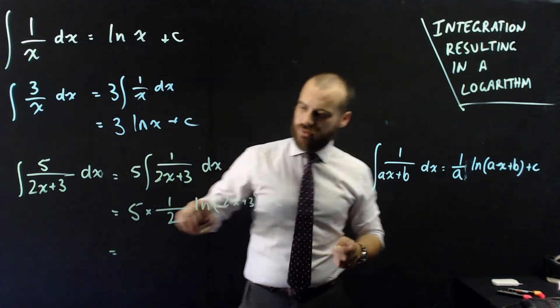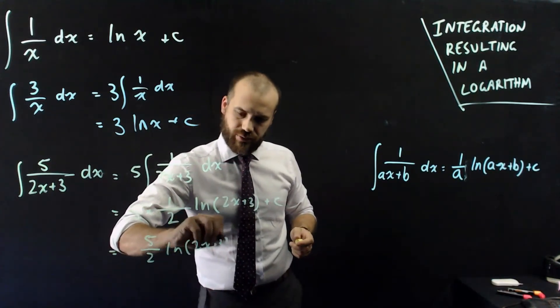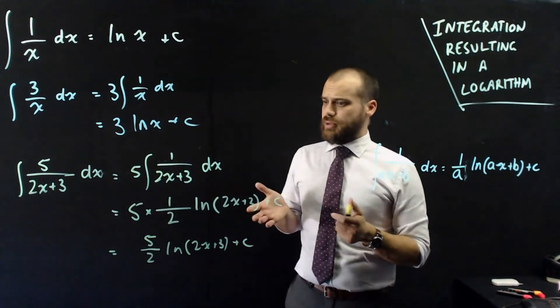All right, and that's 5 times a half, which is 5 on 2. 5 on 2, ln, 2x plus 3, and our plus c on the end. There isn't a lot to say about this.